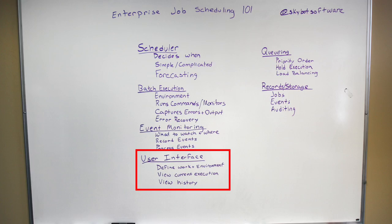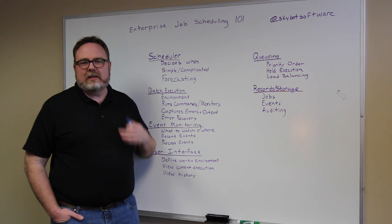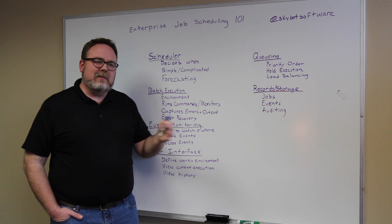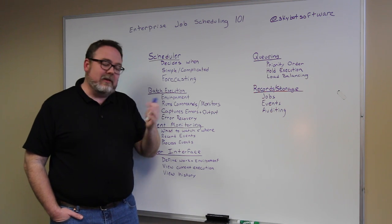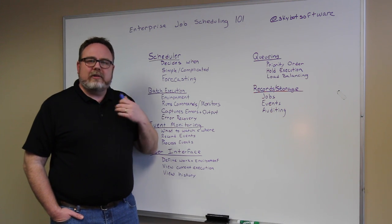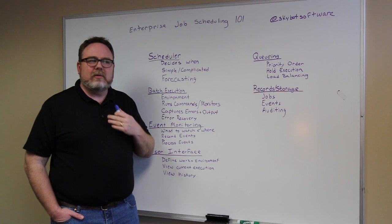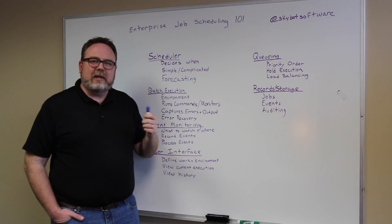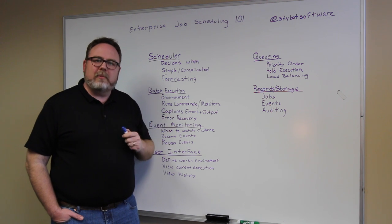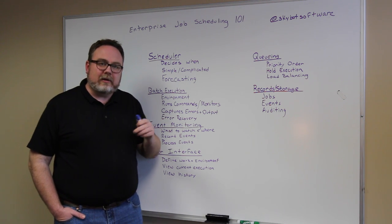The fourth thing we're talking about today is the user interface. This is really important, because if you don't have a user interface, you can't work with the software. The big thing you're doing there is defining the work to be done by the computer, and also defining the environment — the path, environment variables, and what programs are going to be running. Another big task of the user interface is to show you what is currently running — you're occasionally going to check in and want to see what is actually running and how long it's taking. And then the third part is to view the history of what has already run and how long it took, which can help you with planning later.